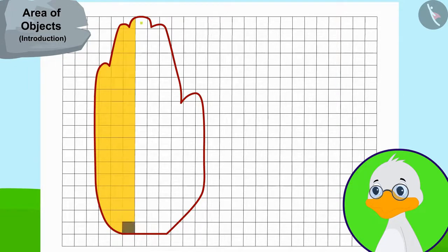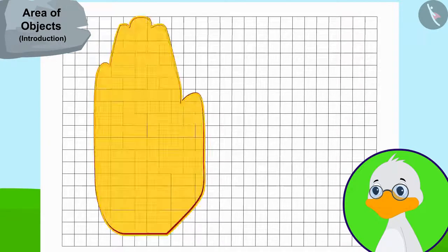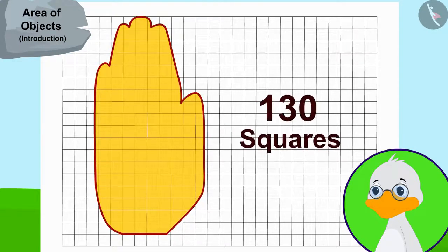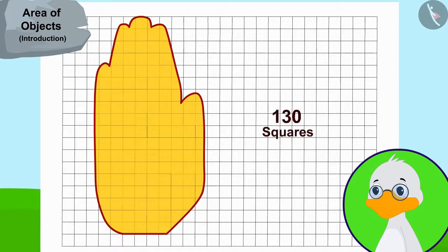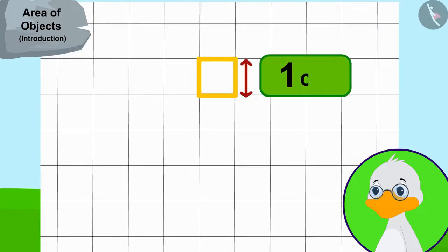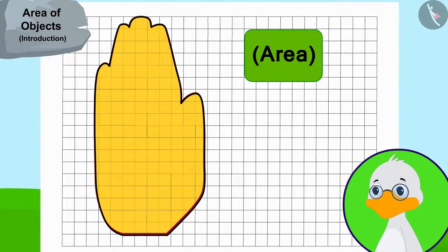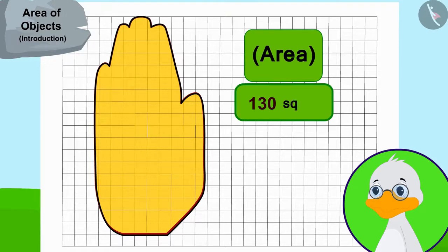Uncle then counted the number of squares covered by the hand impression to find the area of the hand impression. It took a long time for uncle to do this process, and finally he came to know that the hand impression is covering 130 squares. The side of each square is one centimeter long, therefore the area of this hand impression is 130 square centimeters.